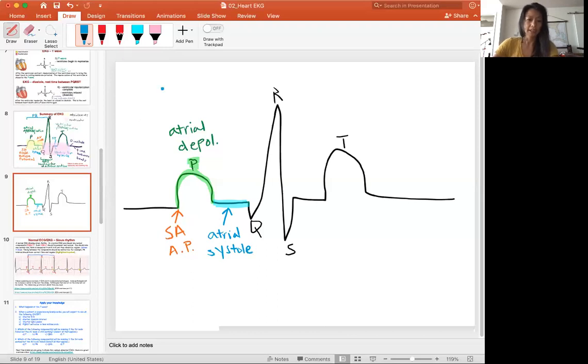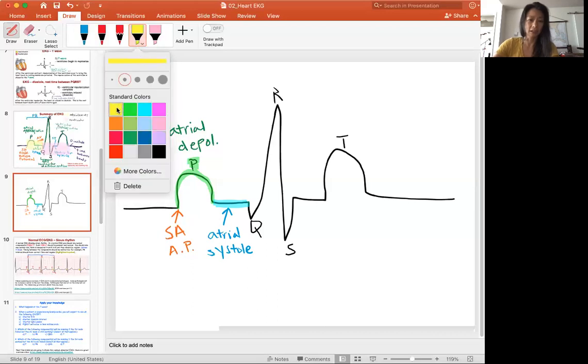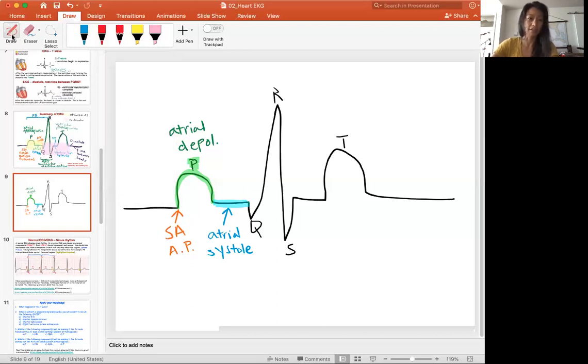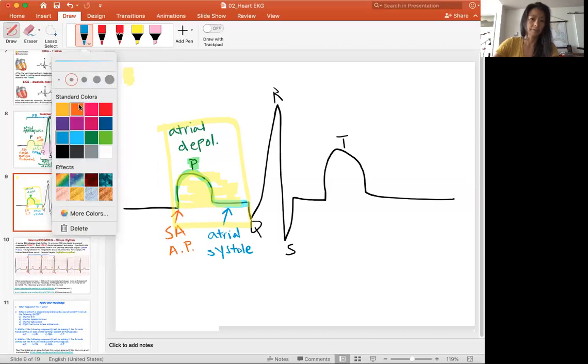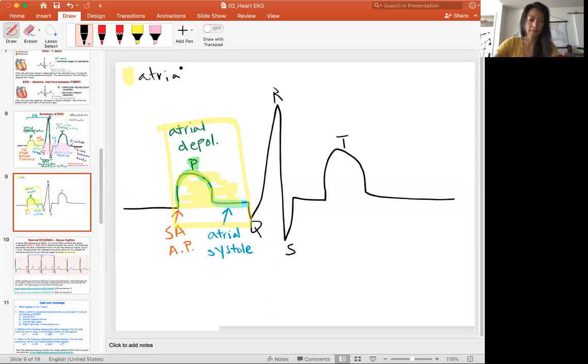So now this whole area that I have highlighted, that I have talked about, this is all happening in the atrial region. You have the contraction, you have the switch going on, you have the depolarization and you have the contraction. So this whole region, I'm going to box it as yellow. This whole region is atrial.